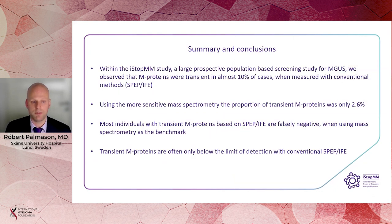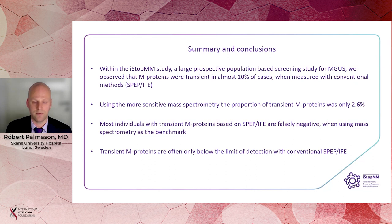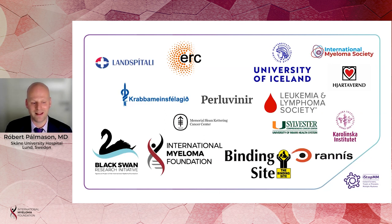We conclude that within the iSTOP-MM study, a large prospective population-based screening study for MGUS, we observed the M protein to be transient in almost 10% of cases when measured with conventional methods. Using the more sensitive mass spectrometry, the proportion of transient M protein was only 2.6%. Most individuals with transient M proteins based on SPEP or IFE are falsely negative when using mass spectrometry as a benchmark, and transient M proteins are often only below the limit of detection compared to conventional SPEP or IFE. Thank you for your attention, and I would like to thank our collaborators and especially The Binding Site for their help with this study.